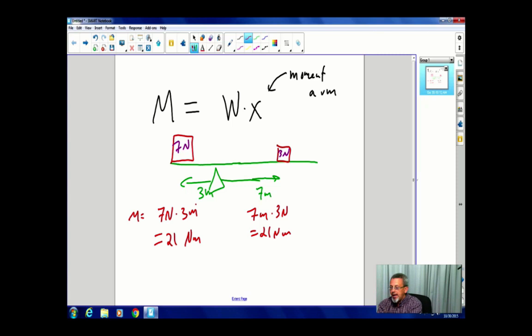If I instead decide to put it out further, let's say I say it was 6 meters, balancing with 14 meters. Well, now I have 7 times 6, that's 42, and 3 times 14, that's 42. So we can start thinking about this as being a balance of these things called moments, how much spin they're actually going to have.